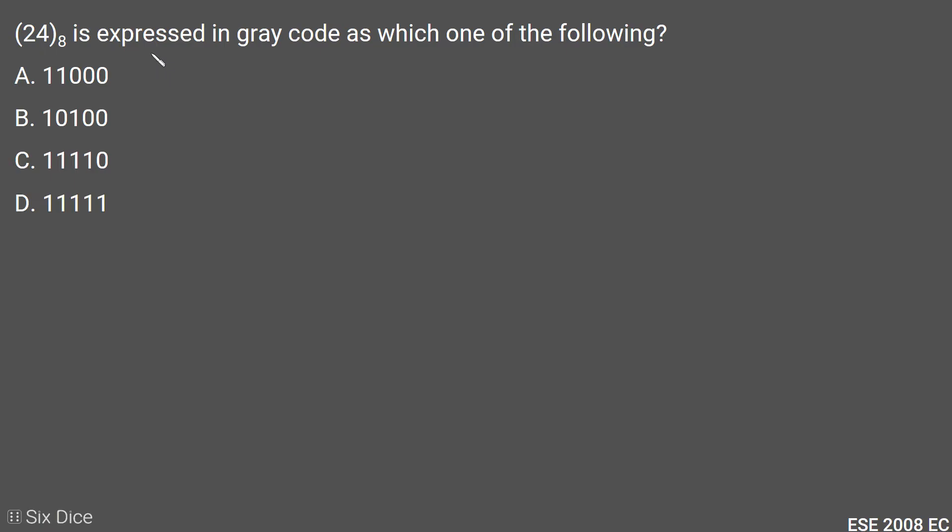Okay, in this question we need to convert a given octal number into gray code. But we cannot directly convert octal number into gray code. We first need to convert our octal number into binary, then we will convert our binary number into gray code.